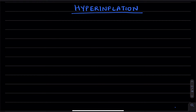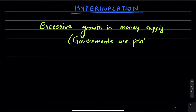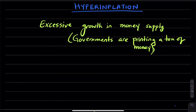In this video, we're going to be talking about hyperinflations. Hyperinflations are situations where there is an excessive growth in money supply. This is usually caused by governments printing too much money. Usually, they are doing this to finance their deficits and make payments.